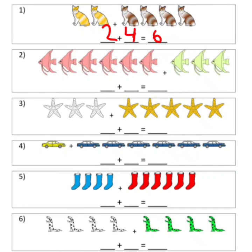Let's do one more. How many pink fishes are there? Let's see: one, two, three, four, five, six — there are six pink fishes. And how many green fishes are there? Three. One, two and three. Now let's count the total fishes. Six are pink fishes and three are green fishes. Let's count total: one, two, three, four, five, six, seven, eight, nine. There are total nine fishes. Like this you have to complete the whole worksheet.